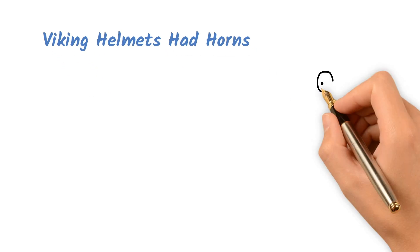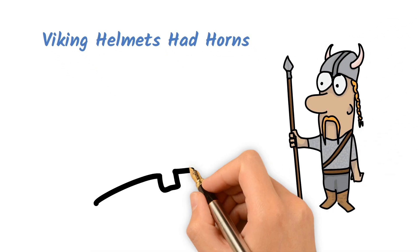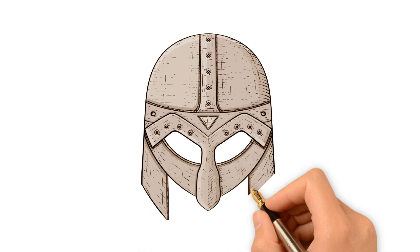Viking Helmets Had Horns. Popular culture depicts Vikings with horned helmets, but there's no archaeological evidence to support this. Viking helmets were likely made of leather or metal and lacked horns.